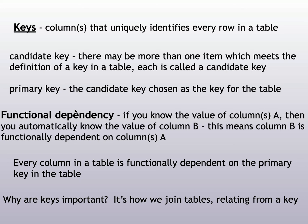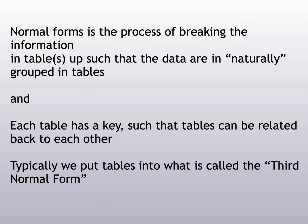Keys are important because that's how we join tables, remembering we have to join them taking that one-to-many or one-to-one relationship. Making normal forms is a process of breaking up information into tables so they are naturally grouped, each table has a key, and the tables can be related unambiguously from a primary key to a foreign key. We typically put tables into third normal form. There are various normal forms — fifth or sixth have been defined — but most of the utility comes from third normal form.